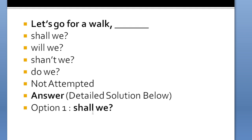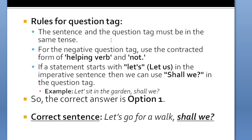The correct option is option number one: 'shall we.' The reason is that the sentence and question tag must be in the same tense. For a negative question tag, use the contracted form of the helping verb with 'not.' If a statement starts with 'let's' or 'let us' in an imperative sentence, we use 'shall we' as the question tag. Example: 'Let's sit in the garden, shall we?' Complete sentence: 'Let's go for a walk, shall we?'